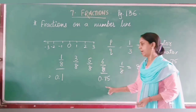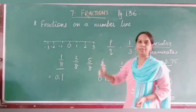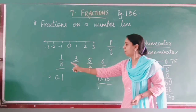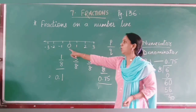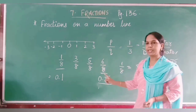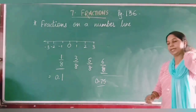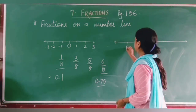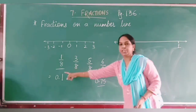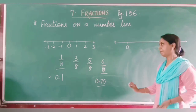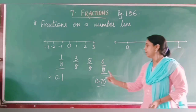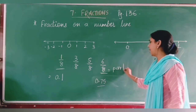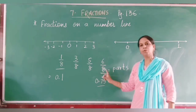So our number line is between 0 and 1. Now let us plot the number line. We do not need negative integers here, so we will work only with positives. We draw the number line with 0 here and 1 here.